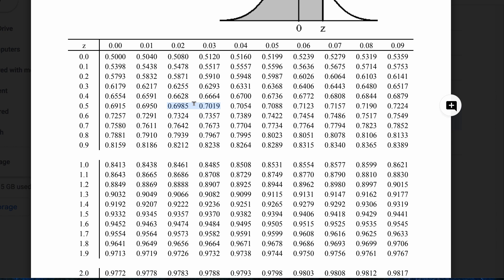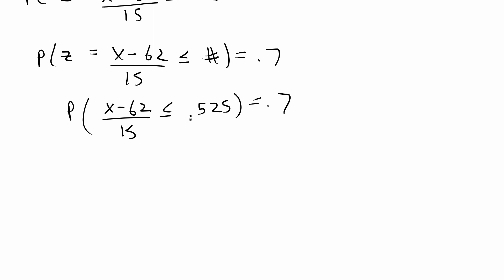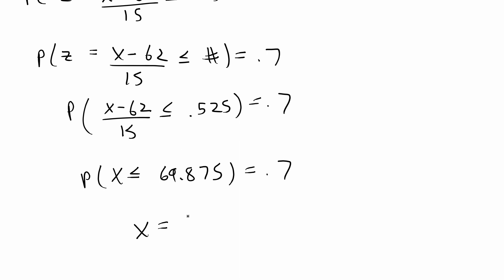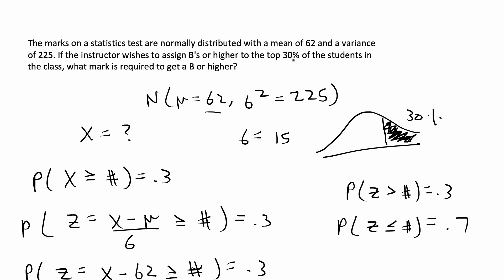I'm going to plug this z-score back into the equation: P((x − 62) / 15 ≤ 0.525) = 0.7. Solving the inequality inside, I multiply both sides by 15 and then add 62, giving x ≤ 69.875. So the final solution is that the cutoff value should be approximately 69.875, and any score of at least 69.875 should receive a B, so that 30% of students get a B or higher in the class.